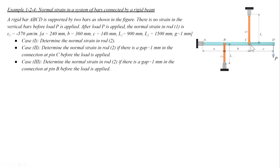We want to solve this problem in three different cases. In the first case, all connections are tight and elements are fully connected. In the second case, there is a gap of one millimeter at the connection between the rigid beam and element 2 at point C. In the third case, there is a gap of one millimeter between the rigid beam and element 1 at point B. I recommend you pause here and try to solve this before looking at the solution.